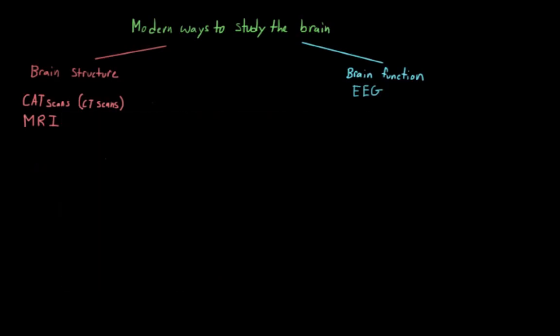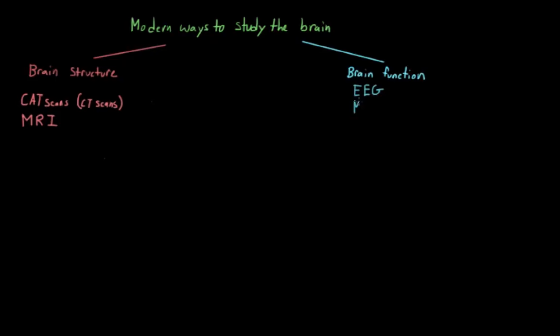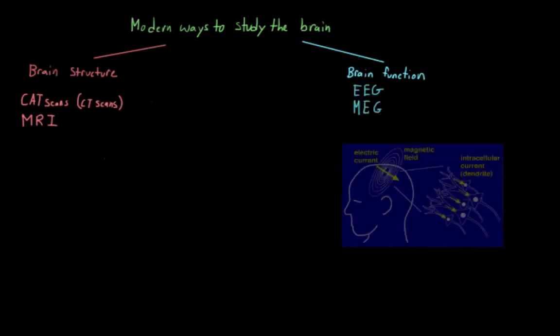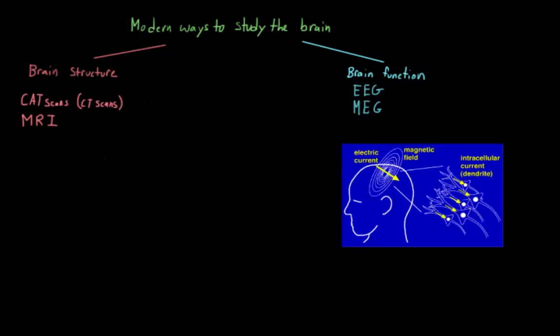Another type of functional recording is magnetoencephalography, or MEG. This records the magnetic fields that are produced by the electrical currents in the brain. I don't mean to give you too many acronyms, but these magnetic fields are measured using superconductive quantum interface devices, which are also known as squids. This technique has a better resolution than EEG, but it is also a lot more rare, at least within the social sciences.